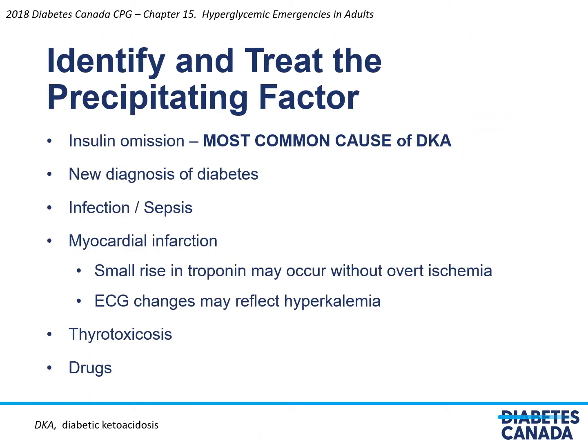The next step is to identify and treat precipitating factors. Insulin omission is the most common cause of DKA. DKA can also occur as a new diagnosis of type 1 or even type 2 diabetes, because of infection and sepsis, or because of myocardial infarction — a small rise in troponin may occur without overt ischemia. ECG changes may reflect hyperkalemia. Thyrotoxicosis and certain drugs can also precipitate DKA.